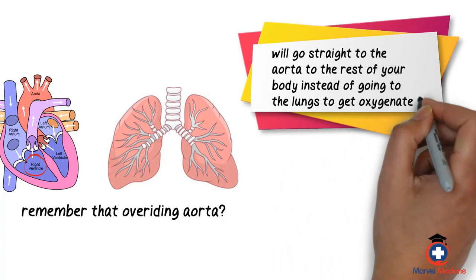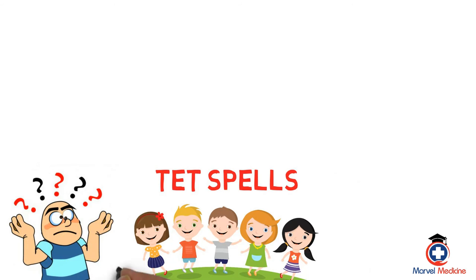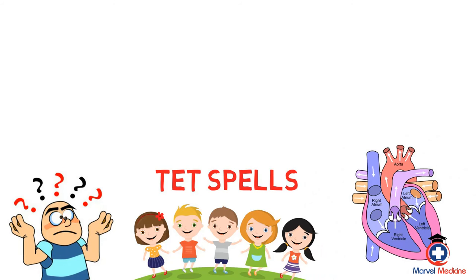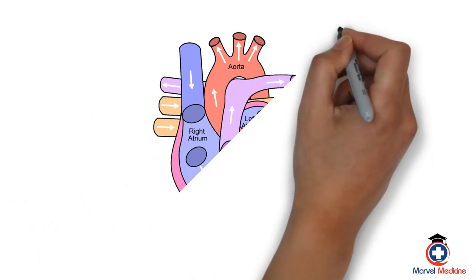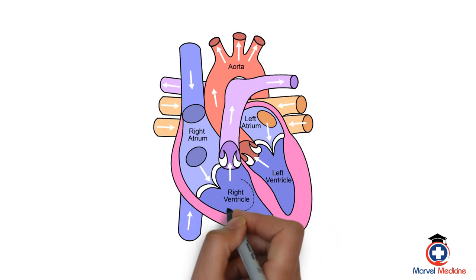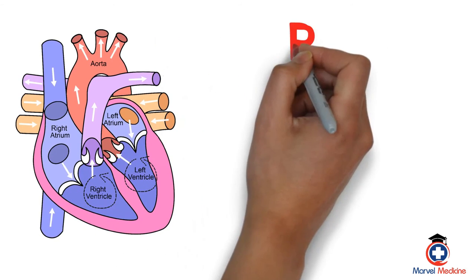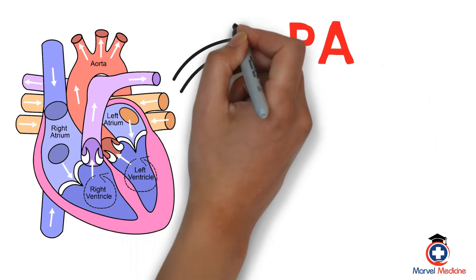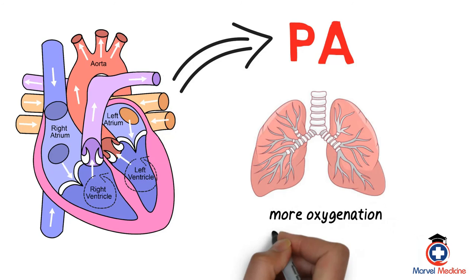So what do kids with tet spells do to make themselves feel better? You have to understand the problem: too much blood going through the aorta and not enough going through the pulmonary artery. Let's increase the aorta's afterload. By increasing this, blood in the ventricles will be less likely to go to the aorta and will instead go to the pulmonary artery — meaning more blood to the lungs, more oxygenation, feeling better, and less blue.